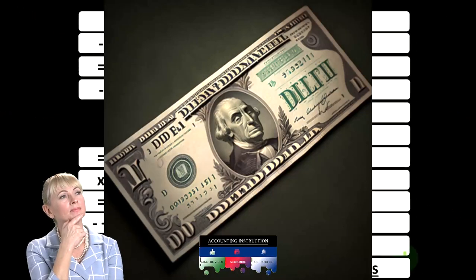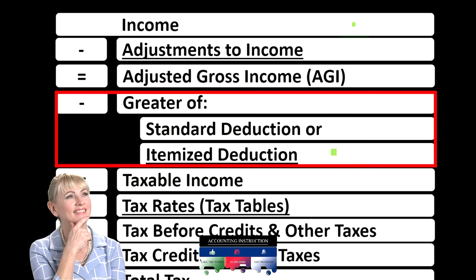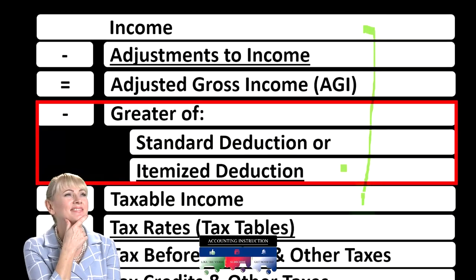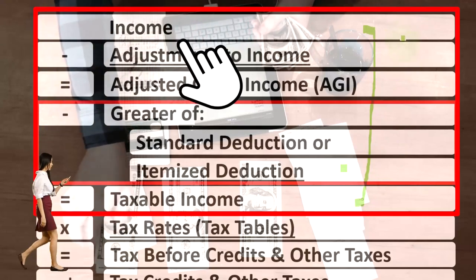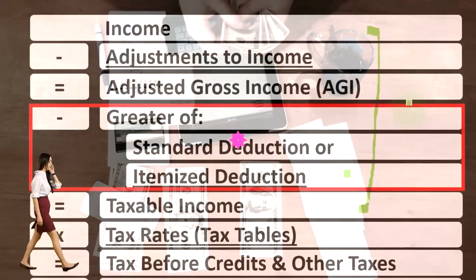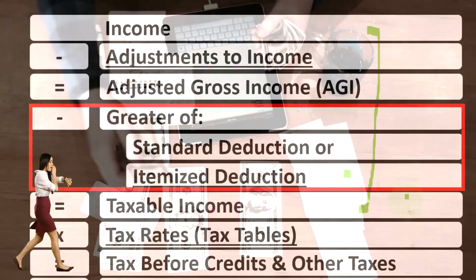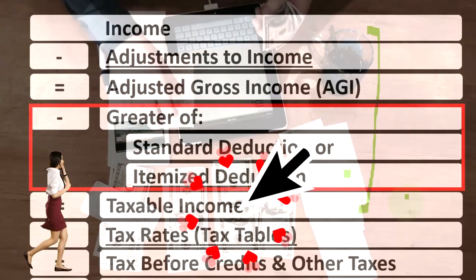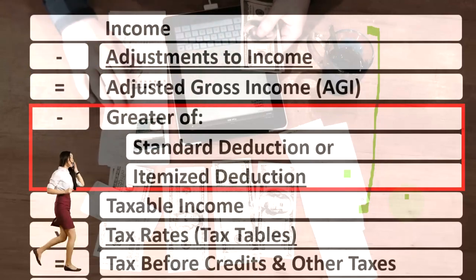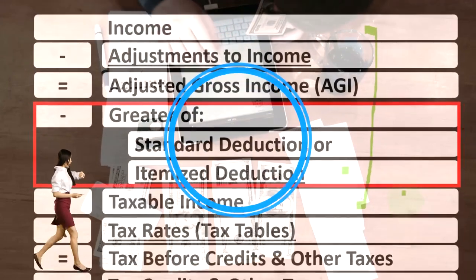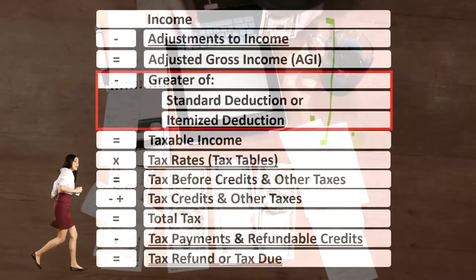Looking at the income tax formula, we're focused on the itemized deductions, remembering that the first half of the income tax formula is in essence an income statement, where we have income minus the equivalent of the expenses — those being the deductions — equals the equivalent of net income, that being taxable income. Everything's topsy-turvy for taxes: we want taxable income to be as low as possible, as opposed to net income, where we normally want it to be as high as possible.